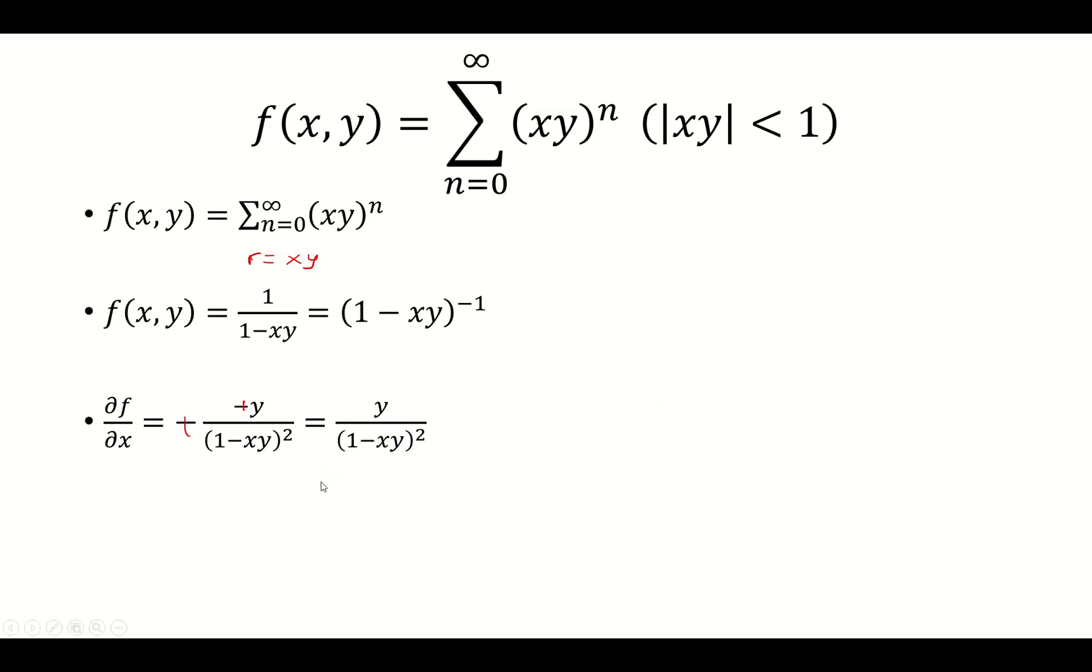Similarly, for the derivative with respect to y, we're going to use the chain rule. When we take the derivative of the inside with respect to y, x is the constant. So the derivative of the inside is just negative x. Again, the two negatives turn into a positive. So our derivative is x over (1 minus xy) squared.